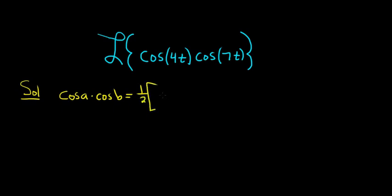And I'll use a bracket. And then it's cosine of a plus b, plus cosine of a minus b.